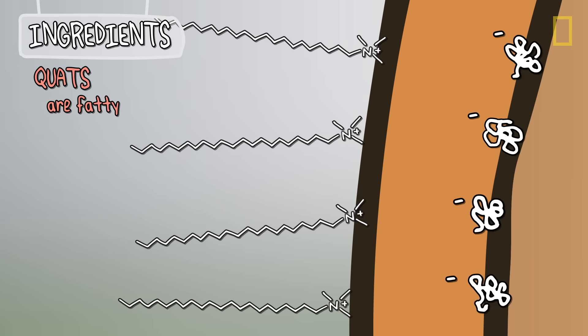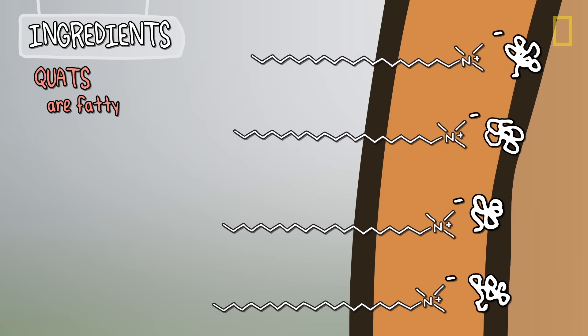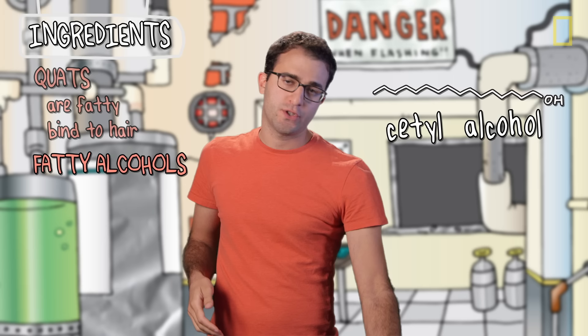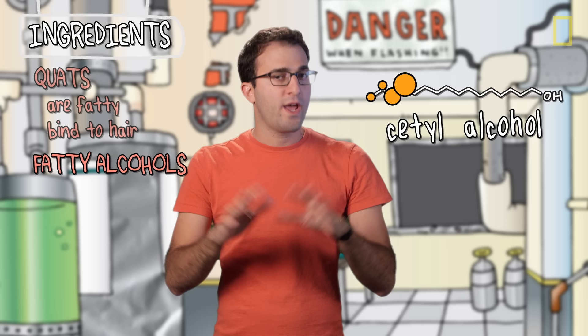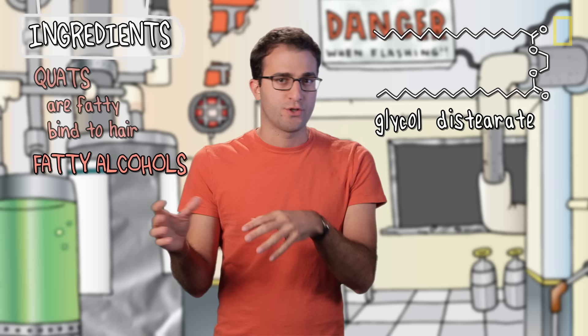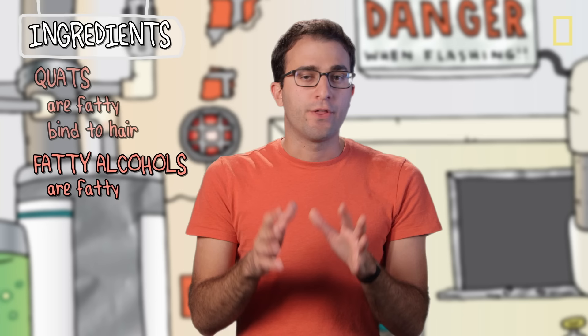The critical thing about quats is that the nitrogen is positively charged, so it's attracted to the negatively charged hair surface and can bind to it, leaving that long fatty acid tail sticking up. The second category is fatty alcohols, most commonly cetyl or cetearyl alcohol. Now these are not like the alcohol you may be used to — the stuff in here is ethanol, it's got two carbons. Fatty alcohols have way more carbons, like 16 or 17 or even more. And then there's glycol distearate, which is technically not an alcohol, but the structure is sort of similar, so we're going to lump it into this category. Now if all of these look like quats, that's because they all have long fatty carbon chains.